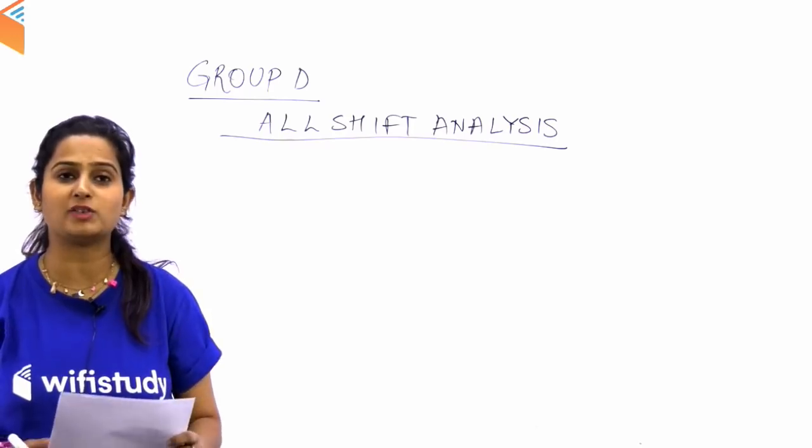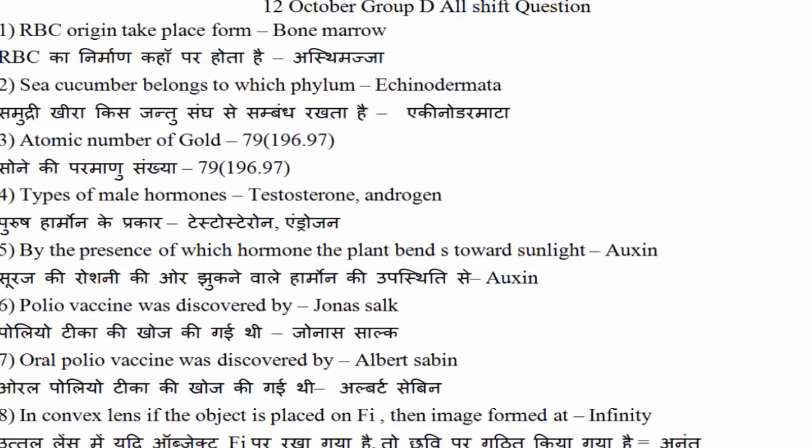पहला question आपको दिया है कि RBC का origin कहां पे होता है — हमारे शरीर में RBC का निर्माण कहां पे होता है. तो याद रखना है आपको bone marrow, यह अस्थि मज्जा में से हमारे RBC और WBC और platelets तीनों ही निकलते हैं.